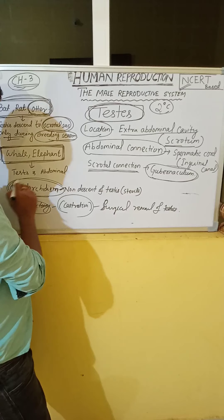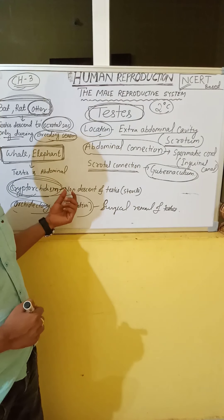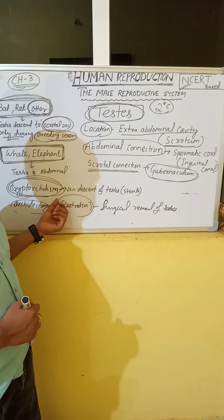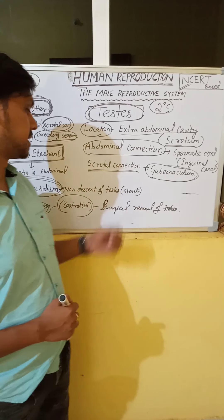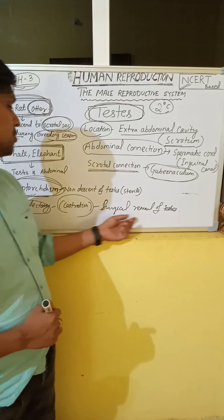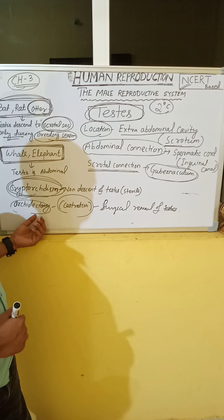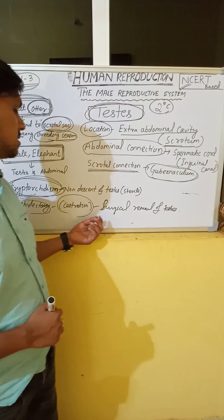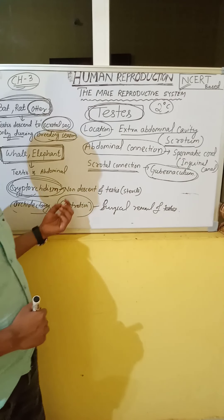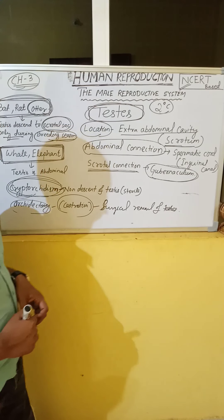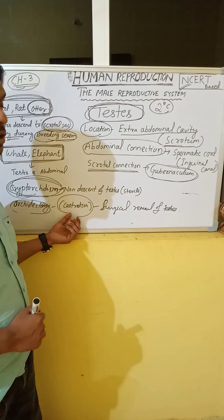Cryptorchidism means non-descent of the testes — if the testes are unable to descend into the scrotal sac, this condition is called cryptorchidism, and the person is sterile. Surgical removal of the testes is called castration or orchiectomy. It may be required during removal of a prostate tumor, because extra androgen hormones secreted by the testes can stimulate prostate cancer growth.